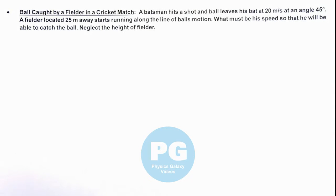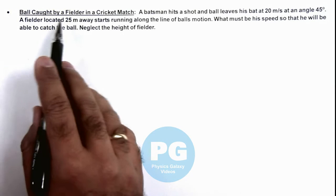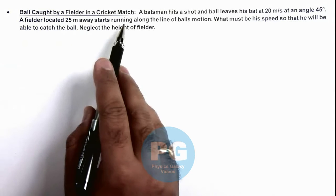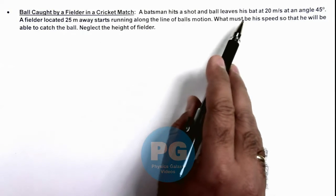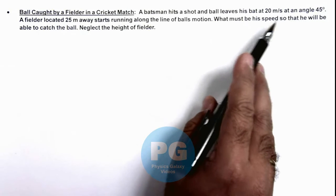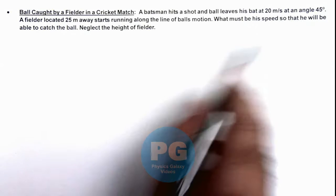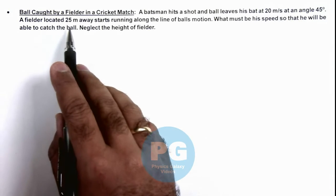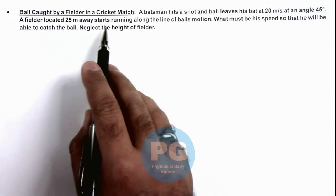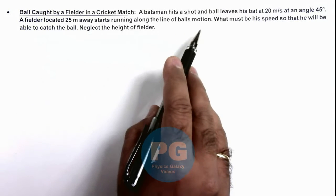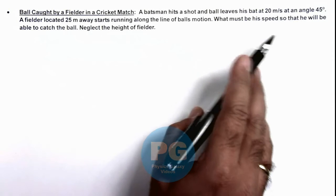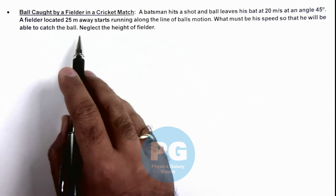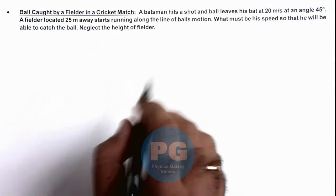In this illustration we'll see a situation when a ball is caught by a fielder in a cricket match. We are given that a batsman hits a shot and the ball leaves his bat at 20 meters per second at an angle of 45 degrees. A fielder is located 25 meters away and starts running along the line of the ball's motion. We need to find what his speed must be so that he'll be able to catch the ball. We can neglect the height of the fielder.